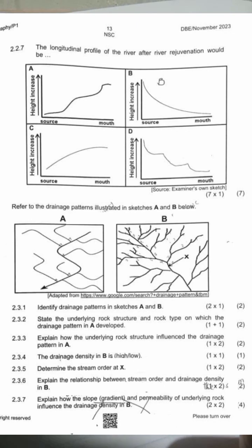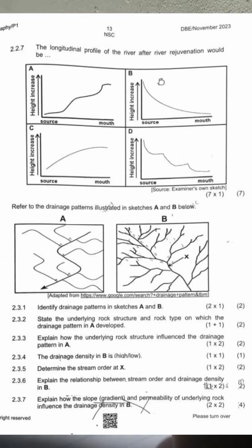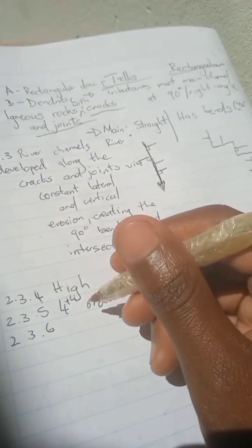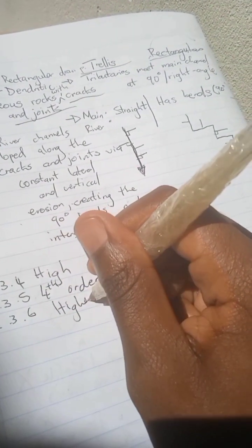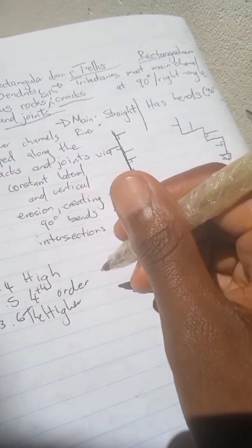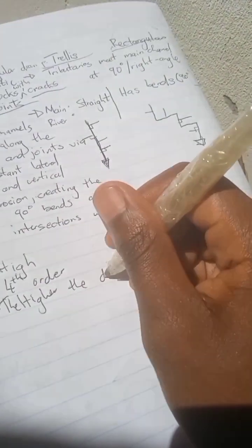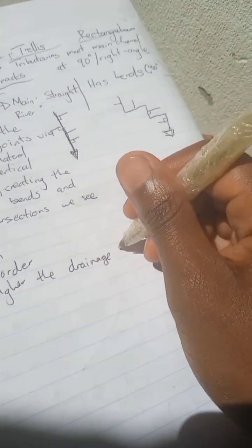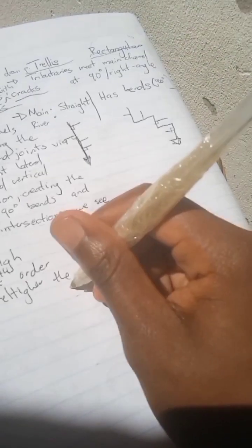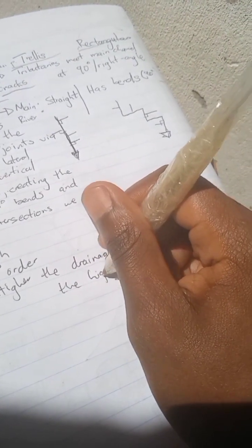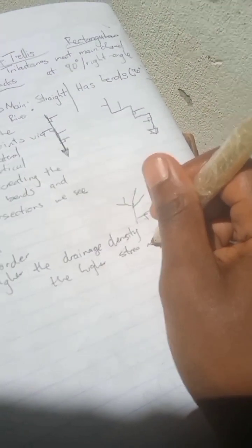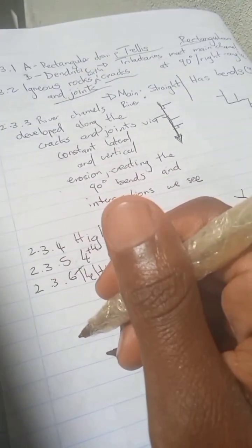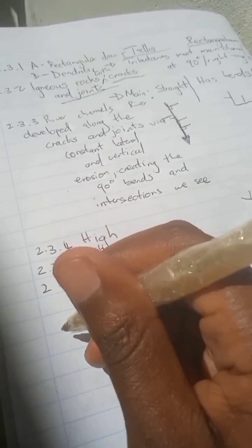For question 2.3.6, explain the relationship between stream order and drainage density in B. The relationship is: a higher drainage density results in a higher stream order. Or you can say: the higher the drainage density, the higher the stream order.